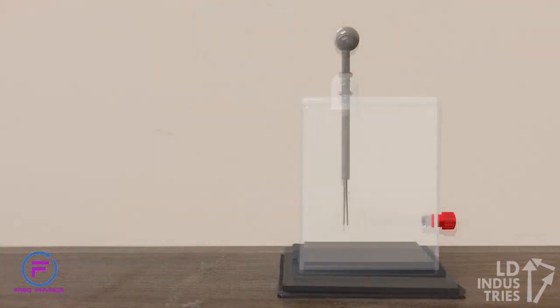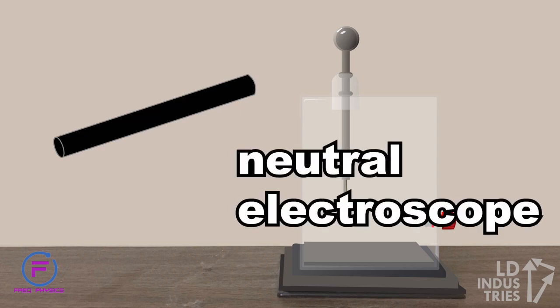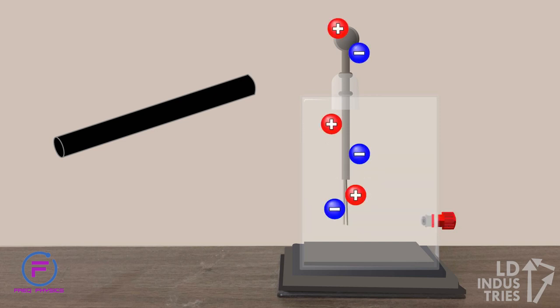We can explain this movement by considering some attractive and repulsive forces between electrons and protons in the electroscope and rod. The electroscope starts off being neutral, which isn't to say it doesn't have any charge, but rather that it has equal amounts of positive and negative charge. I'll show that by putting in equal amounts of protons and electrons here on the electroscope.